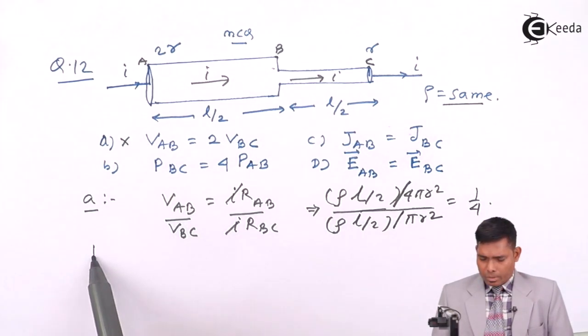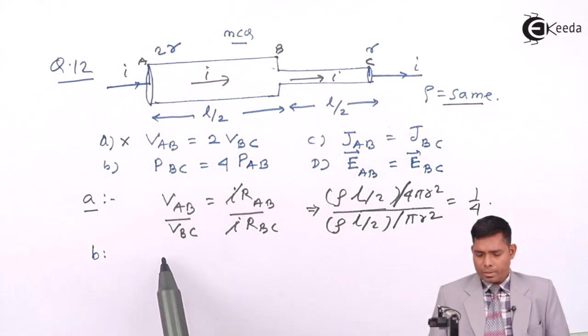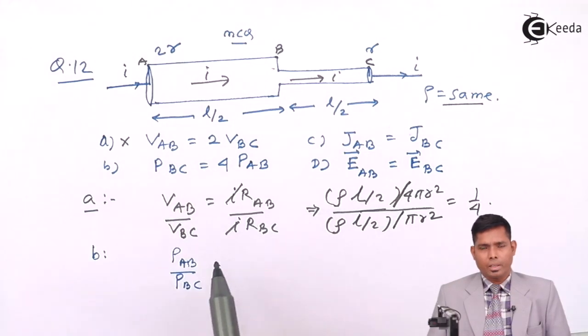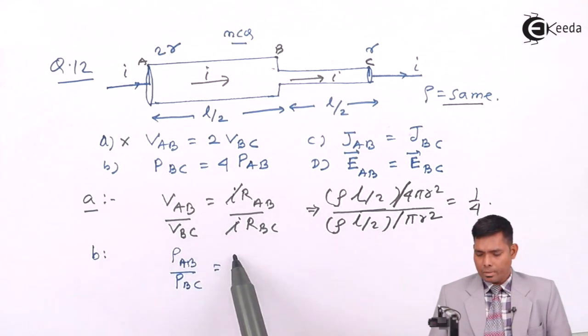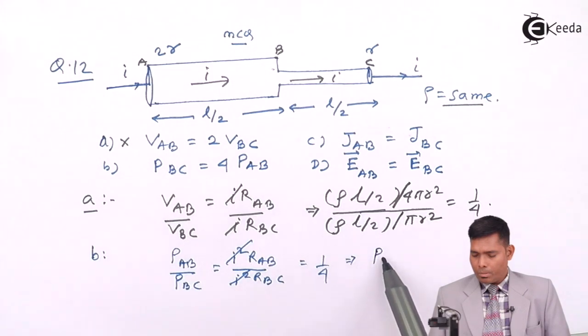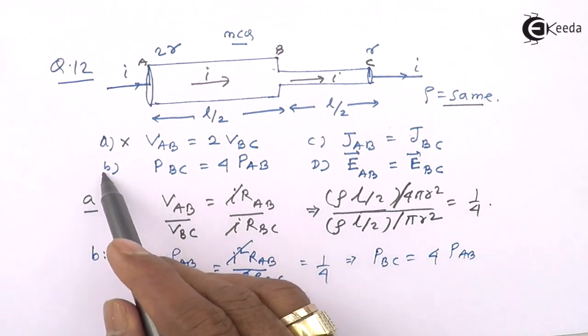Now let us check option B. Power in these two cases - power in AB divided by power BC. Power is I²R. Because I is constant in both cases, I will use that formula. So from here we can write PBC is 4 times PAB. This relation is correct.